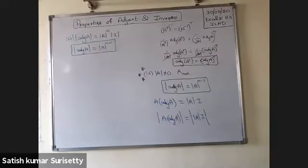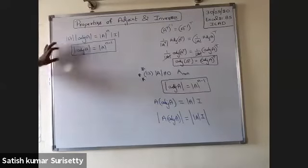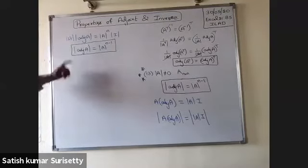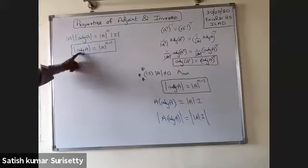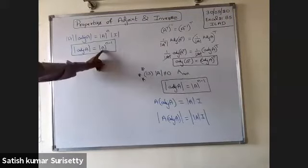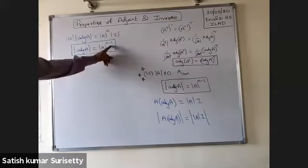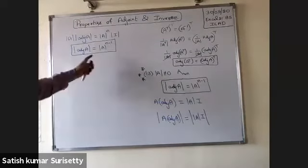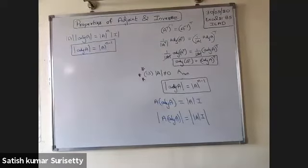So whenever you want to calculate the determinant for any adjoint, instead of calculating the adjoint and then its determinant, you can directly use determinant of A to the power of n minus 1. This is very helpful in numerical problems.